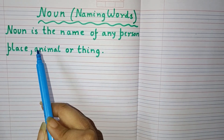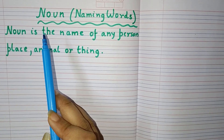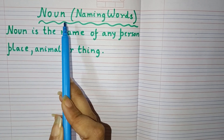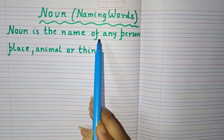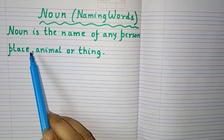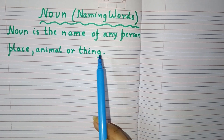Now children, first we will know what is a noun. Noun is the name of any person, place, animal or thing.